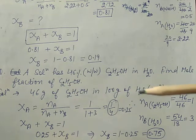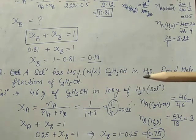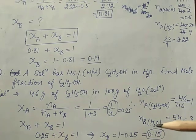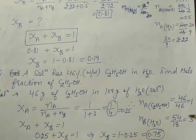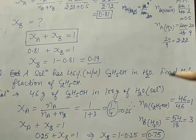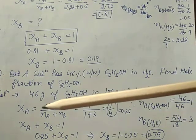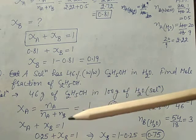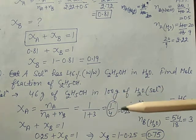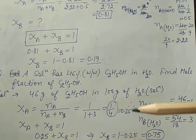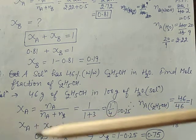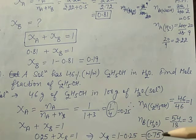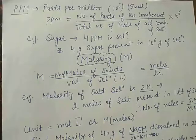Solute plus solvent equals solution, so mass of water (solvent) = 100 minus 46 = 54 gram. Moles of water = 54/18 = 3. Now apply the formula: zeta A = moles of ethanol divided by total moles = 1 divided by (1 + 3) = 1/4 = 0.25. Then zeta A plus zeta B = 1, so 0.25 plus zeta B = 1, giving zeta B = 0.75.